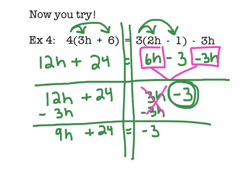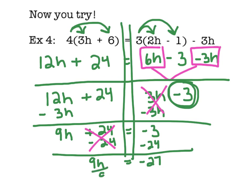Alright, subtract 24 on both sides. Our inverse operations cancel out. And now we have 9h equals negative 27. Divide both sides by 9 so we can finish this bad boy up. Our solution is going to be h equals negative 3. Alright, good luck today, everybody.